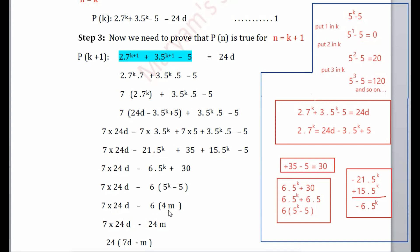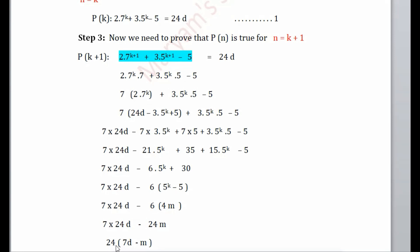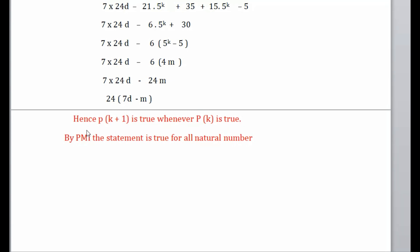Since 5ᵏ - 5 is divisible by 4, we write 5ᵏ - 5 = 4m where m belongs to the natural numbers. So 6(5ᵏ - 5) = 6·4m = 24m. Now taking 24 common from the whole expression: 24(7d - m). Since anything multiplied by 24 is divisible by 24, the left-hand side is divisible by 24. Hence P(k+1) is true whenever P(k) is true, and by PMI the statement is true for all natural numbers.